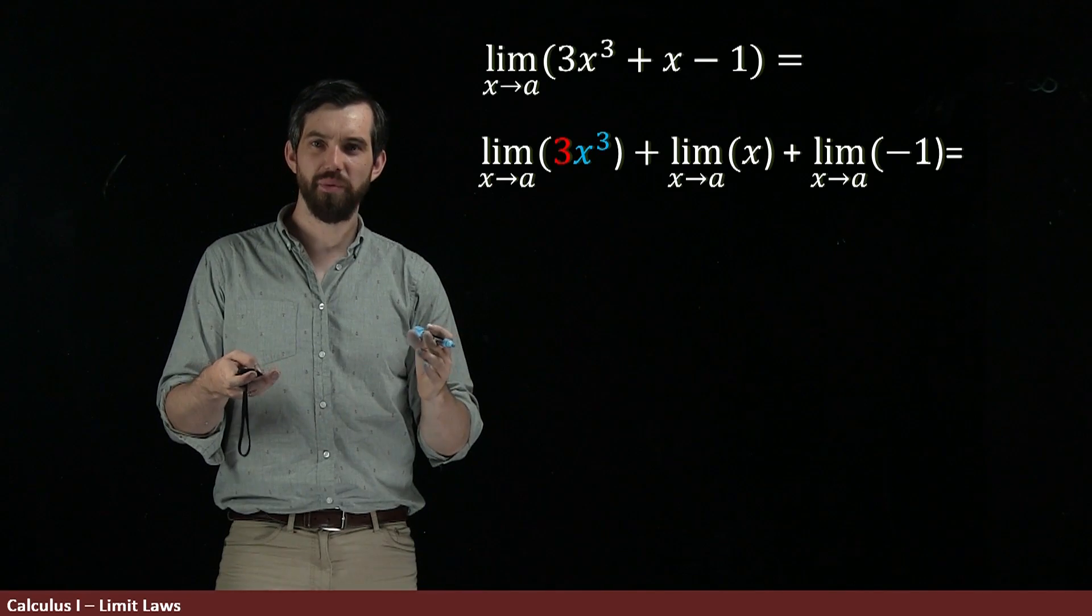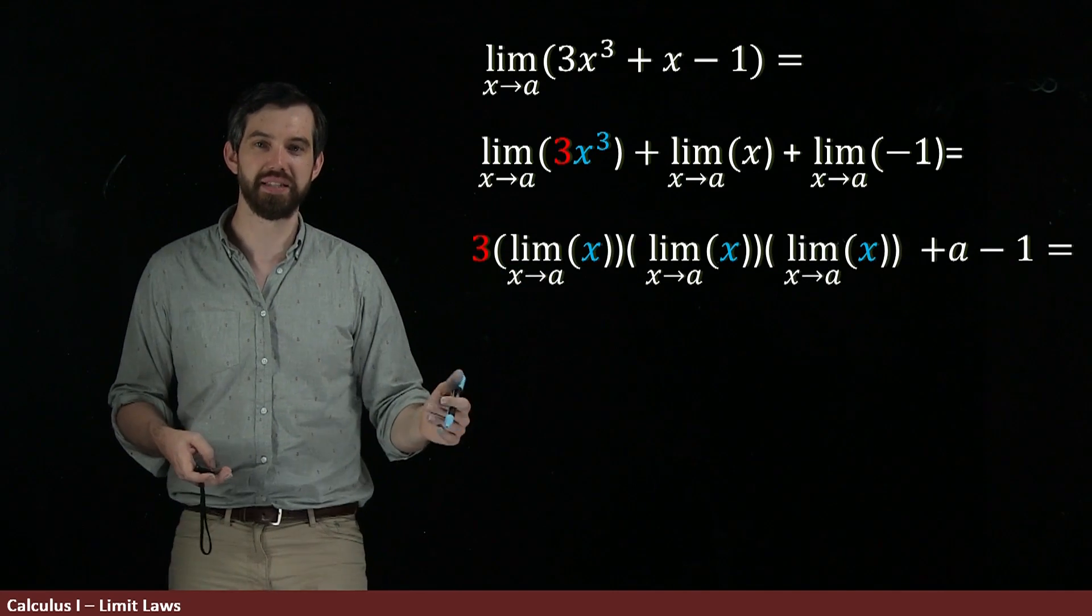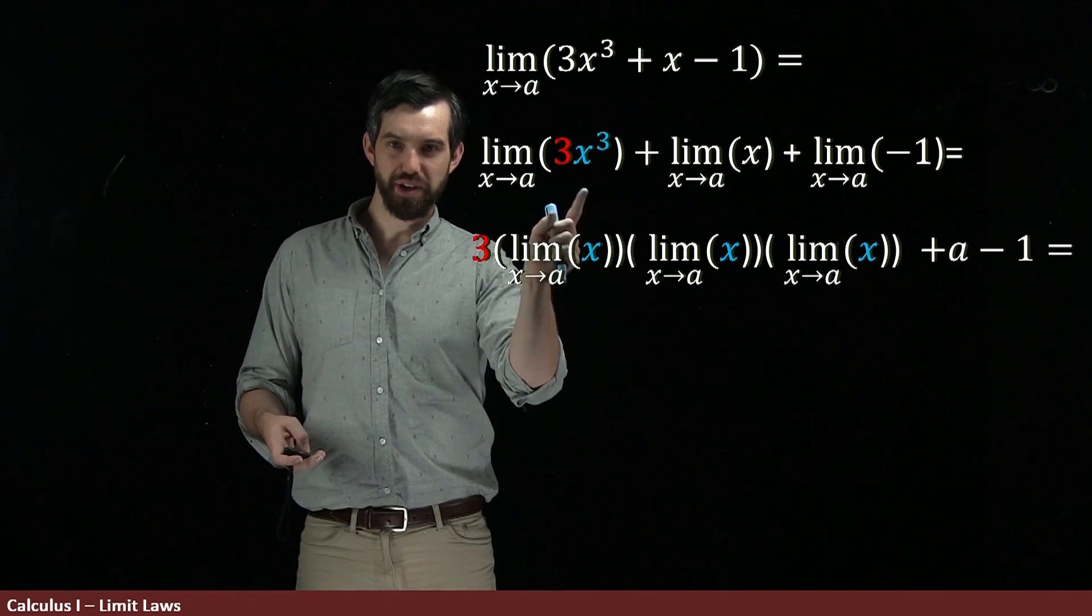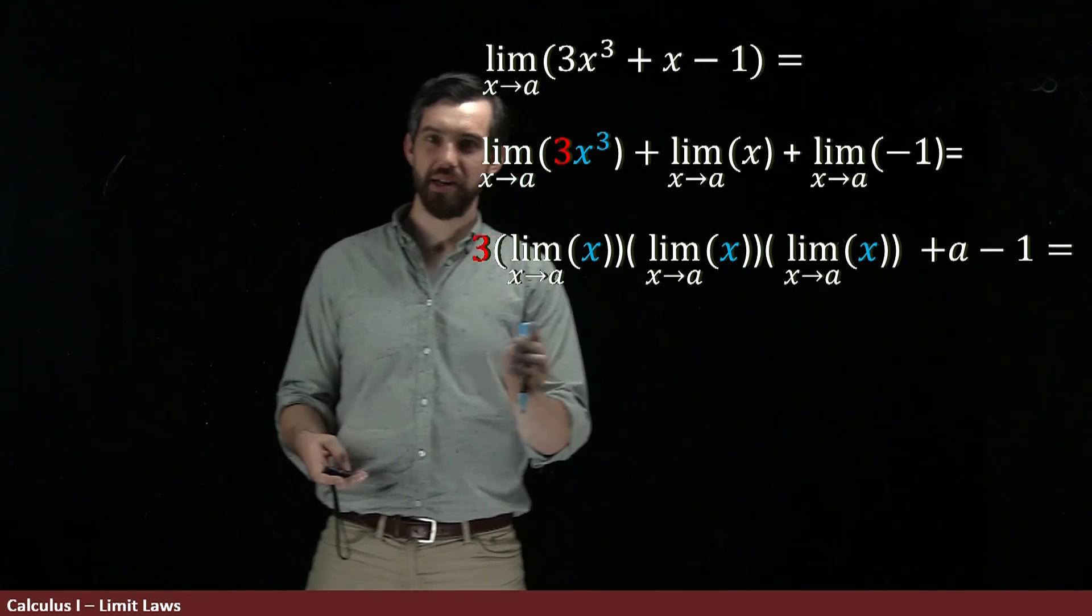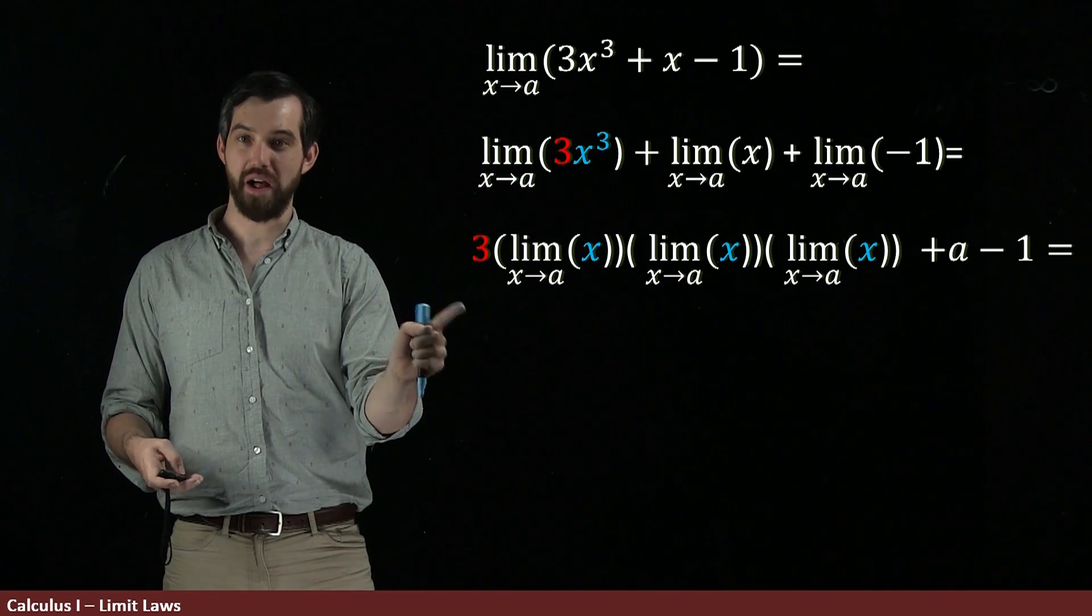So then, when I advance this, what we're going to have is, first of all, the triple product, x times x times x, it's three different limits here. The scalar gets built out of the front. That was one of our rules.